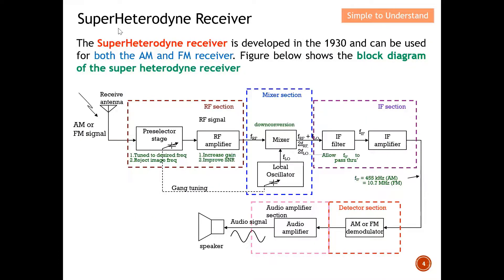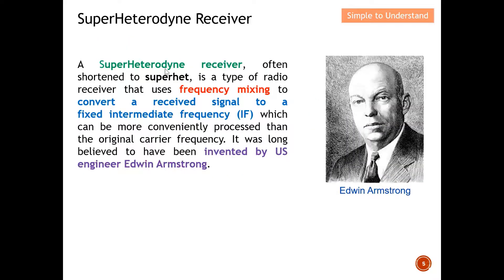Now let's concentrate on the superheterodyne receiver. The superheterodyne receiver was developed in the 1930s and can be used for both AM and FM receivers. The block diagram shows there are RF section, mixer section, IF section, detector section, and audio amplifier section. The superheterodyne receiver — often shortened to 'superhet' — uses frequency mixing to convert a received signal to a fixed intermediate frequency (IF), which can be more conveniently processed than the original carrier frequency.